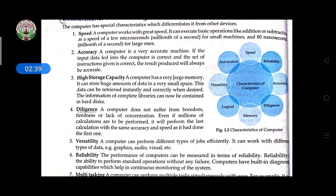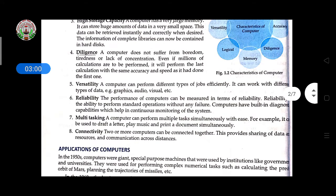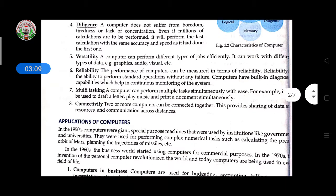Accuracy means computer is very accurate machine. If the input data is fed to computer, then correct output will show. High storage capacity - computer has very large memory, it can store huge amount of data in very small space. Diligence means computer does not suffer from boredom, tiredness or lack of concentration.